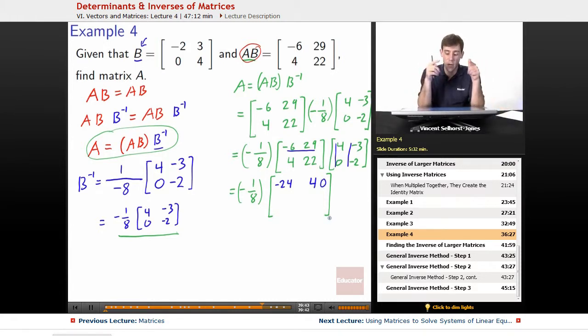Oh sorry, not positive. 29 times negative 2 got us negative 58, so it's a negative 40. Sorry about that. 4, 22 on 4, 0. 4 times 4 gets us 16, and 22 times 0, just 0. So 4, 22 on negative 3, negative 2. 4 times negative 3 is negative 12, 22 times negative 2 is negative 44. Negative 12 minus 44 comes out to be negative 56.